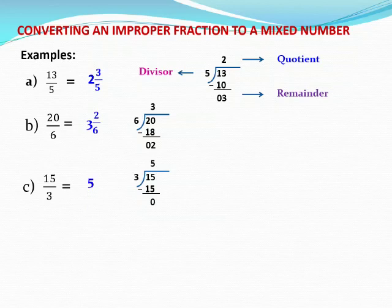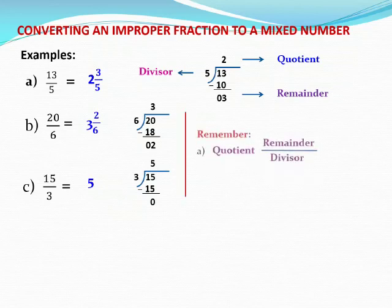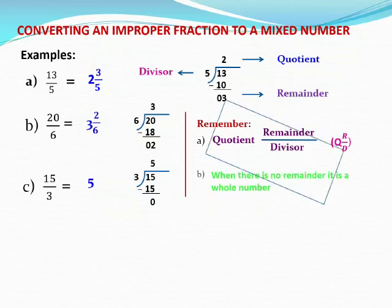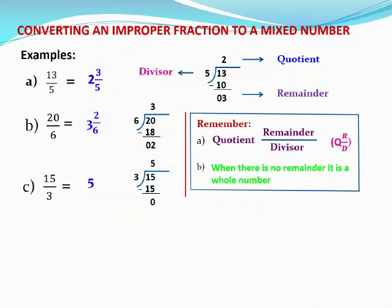We have to remember these steps. When we convert an improper fraction to a mixed number, we write in the form of quotient, remainder by divisor. And remember, when there is no remainder, the answer will be a whole number.